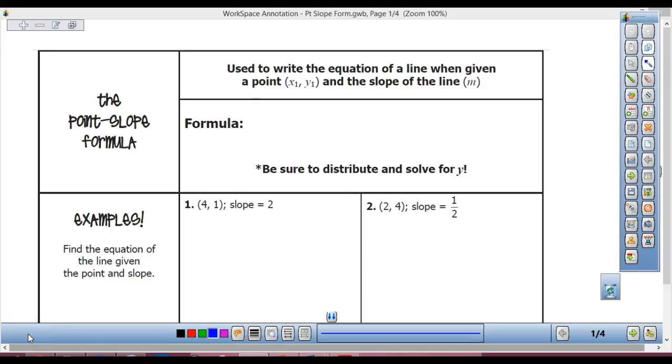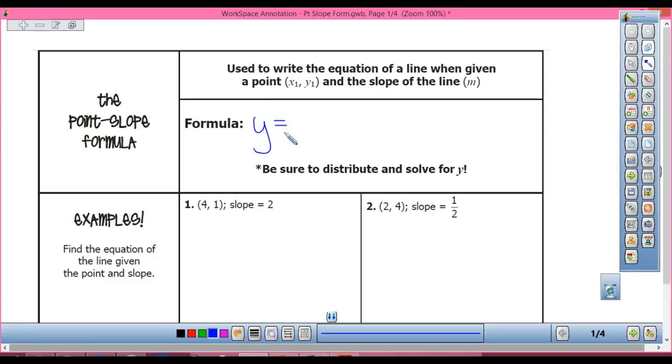All right, so your formula for point-slope form is a little bit different than the way you learned it last year. This year is Y equals, so it starts out the same way as slope-intercept form, M, which is what? So that's your slope, times, then I'm going to put parentheses.